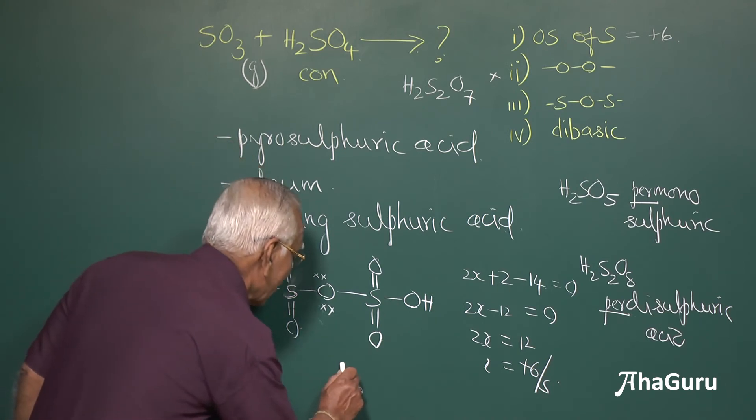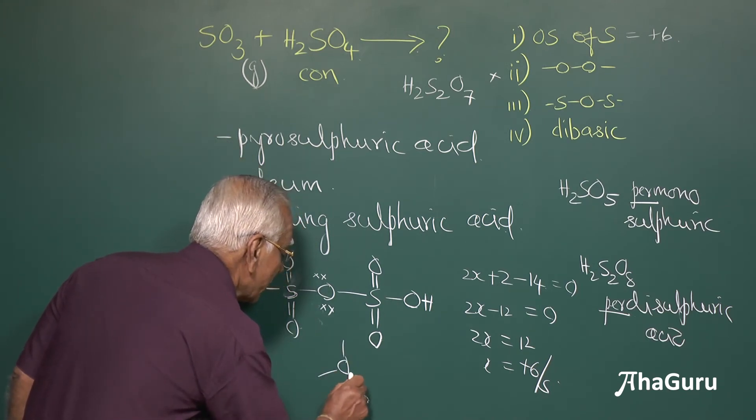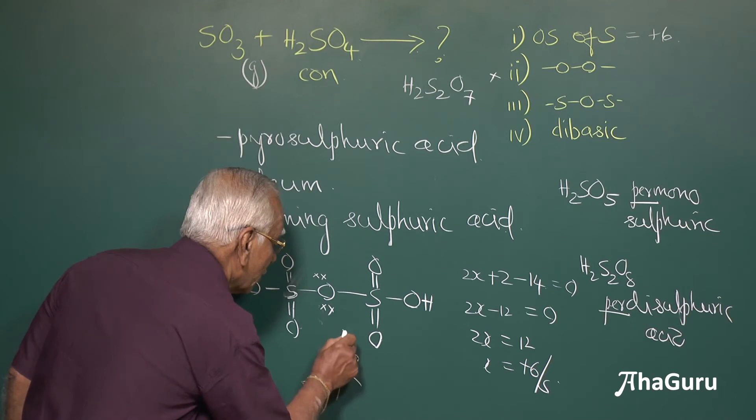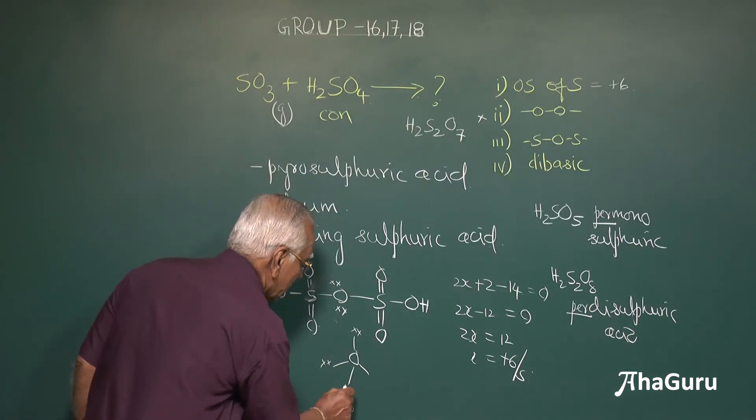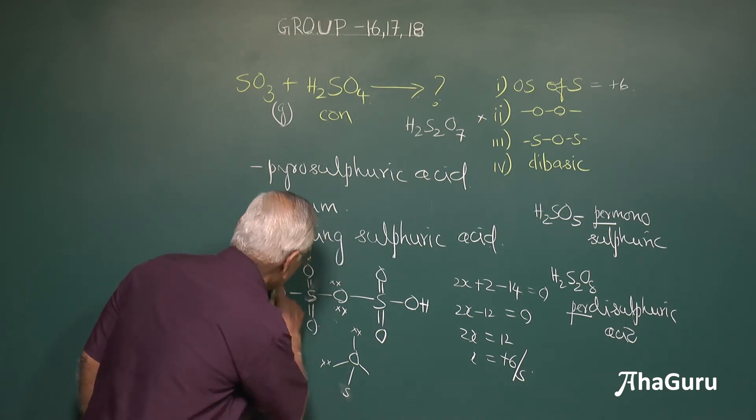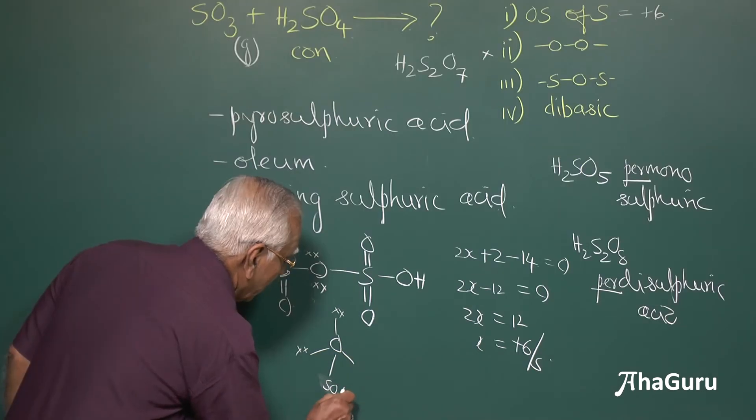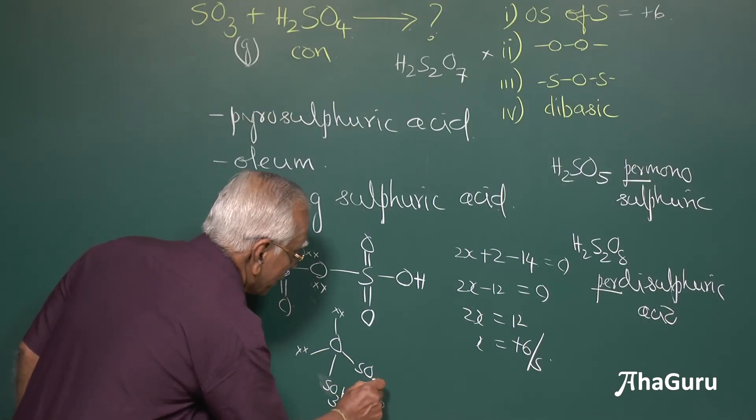So, being 4 pairs of electrons, it must be tetrahedral only. Therefore, this can be a lone pair here, this can be a lone pair here, this can be connected to S, some other atom, SO3, this is SO3H and this is connected to SO3H here.